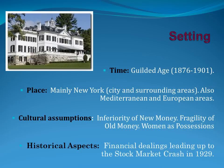The setting is the Gilded Age, generally thought of as 1876 to 1901. The place is mainly New York City and surrounding areas where the wealthy people would spend time in the summer or on the weekends. The Mediterranean and European areas are also important, especially in Book 2. The cultural assumptions include the inferiority of new money, similar to what we've seen with Jane Austen.